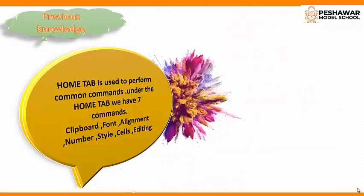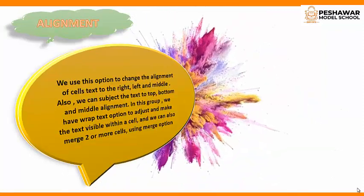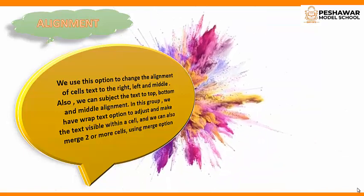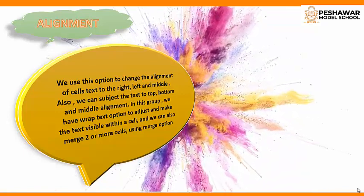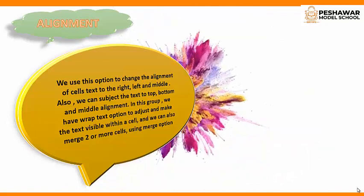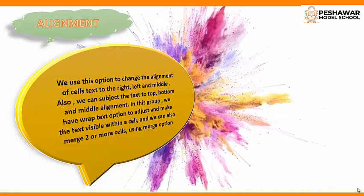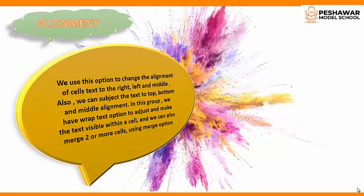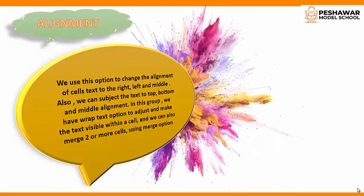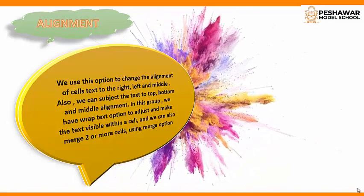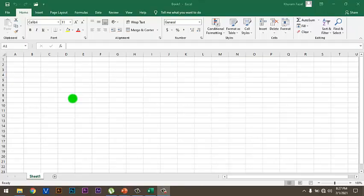Now let's discuss the third group of the Home tab, which is Alignment. We use this option to change the alignment of cell text to the right, left, and middle. Also, we can align the text to top, bottom, and middle. In this group we have a Wrap Text option to adjust and make the text visible within a cell, and we can also merge two or more cells using the Merge option.